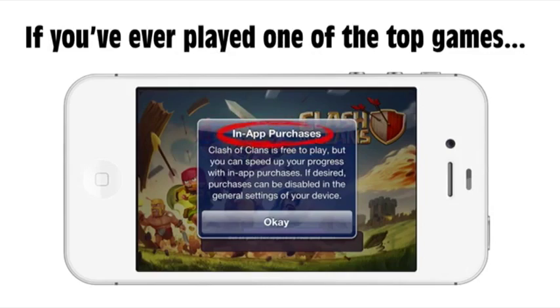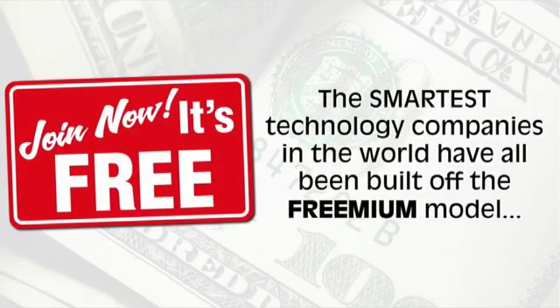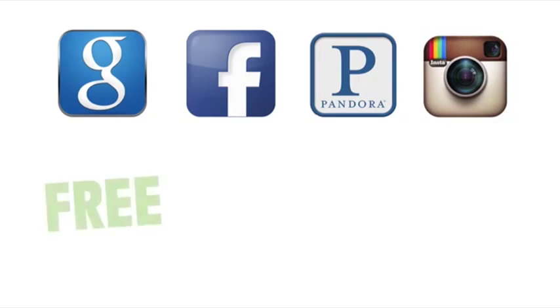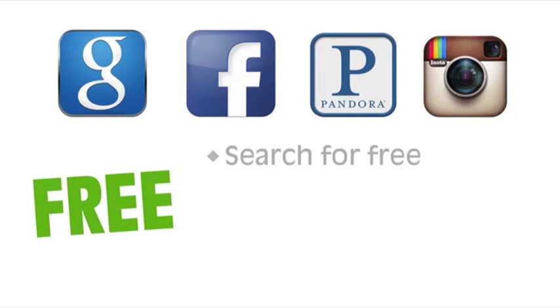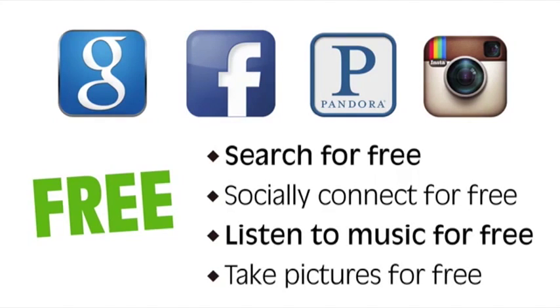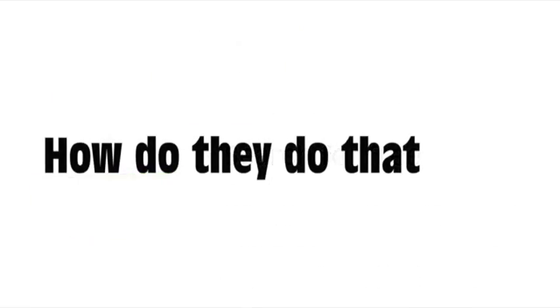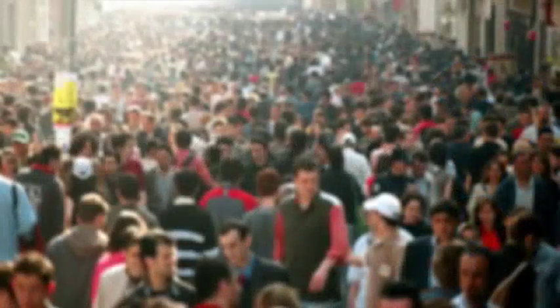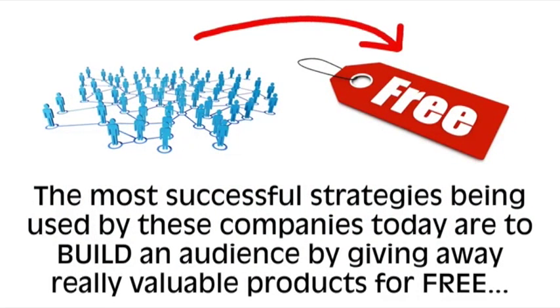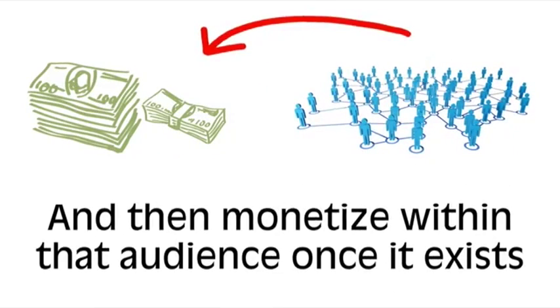If you've ever played one of the top games in iTunes or different apps yourself, you've probably come across in-app purchases. The smartest technology companies in the world have all been built off the freemium model. Look at Google, Facebook, YouTube, Pandora, Instagram. They give their products away for free. You get to search for free, socially connect for free, and listen to music for free, take pictures for free, yet these companies are worth billions of dollars. So the question is, how do they do that? And the answer is audience.